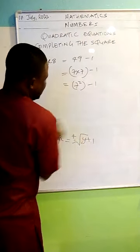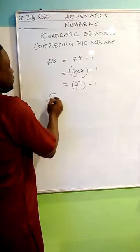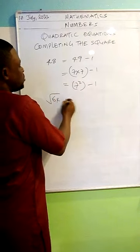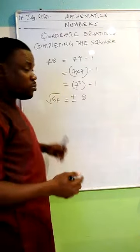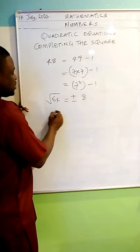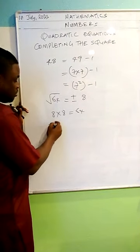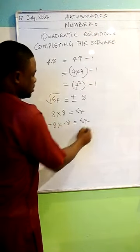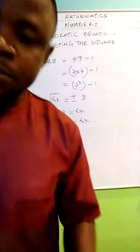Let me try and explain that to you. If I'm asking you to find the square root of 64, it's going to give you plus or minus 8. Take note of that — it's very, very important. Plus 8 times plus 8 gives 64, and minus 8 times minus 8 also gives 64, because minus times minus gives plus.